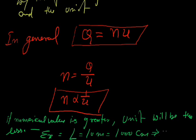So we can say that n1 u1 is equal to n2 u2 is equal to Q. It is equal to the physical quantity. Okay, that's all.